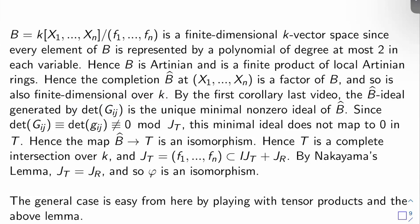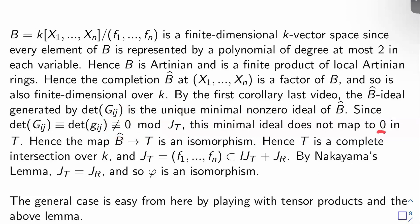By the first corollary from the last video, the B-hat ideal generated by the determinant of the big G_ij's has to be the unique minimal nonzero ideal of B-hat. But the determinant of big G_ij is congruent to the determinant of little g_ij mod J sub T, and that's not congruent to zero. So this minimal ideal cannot map to zero in T — the unique minimal nonzero ideal here doesn't map to zero, so the natural map from B-hat to T is actually an isomorphism.